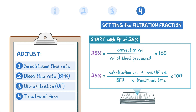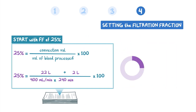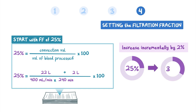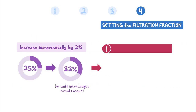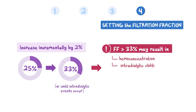For a session with a BFR of 400 milliliters per minute, a treatment time of 240 minutes, and a net UF volume of 2 liters, a substitution volume of 22 liters would theoretically result in an FF of 25%. If tolerated by the patient, the FF can be increased incrementally by 2% at each of the next sessions until reaching 33% or until intradialytic events occur. FFs greater than 33% can result in hemoconcentration and intradialytic clotting.